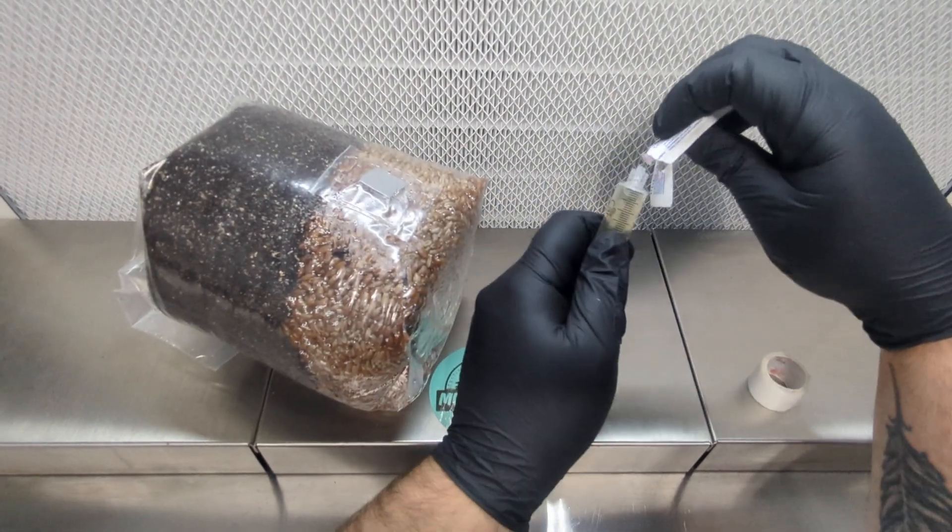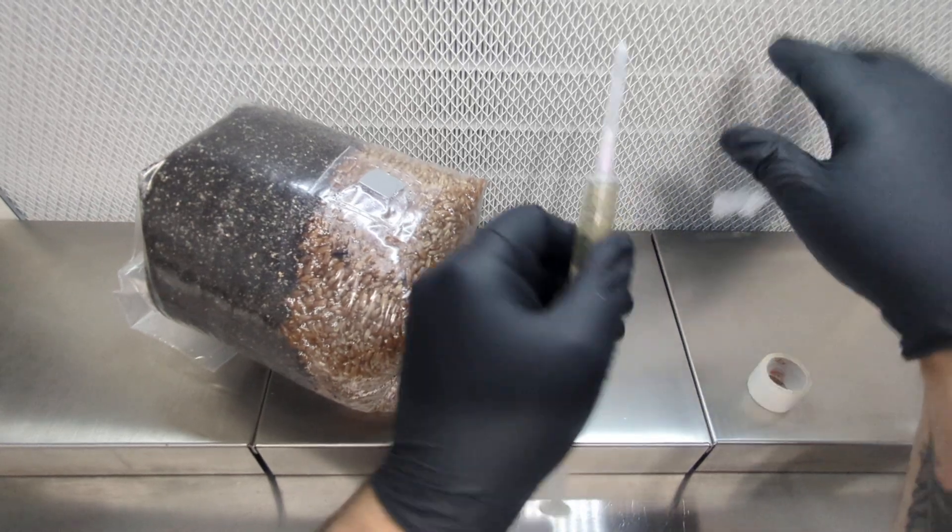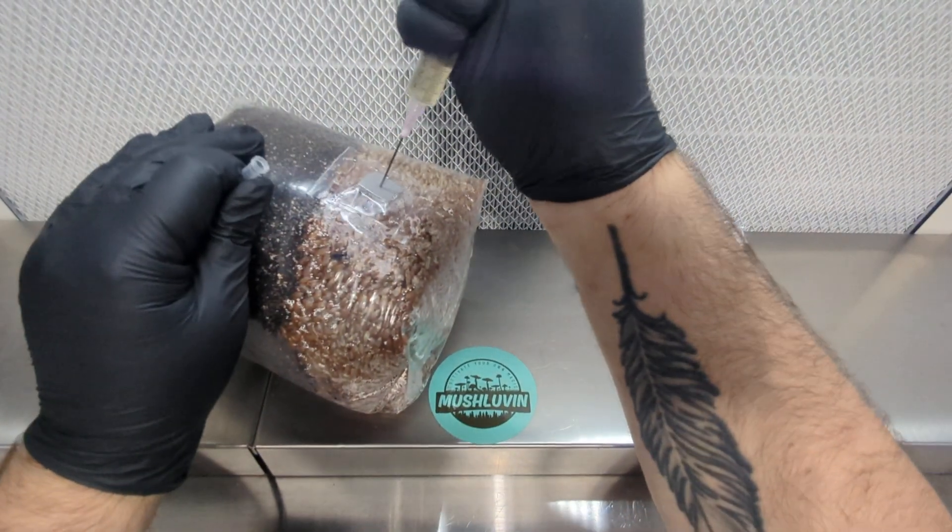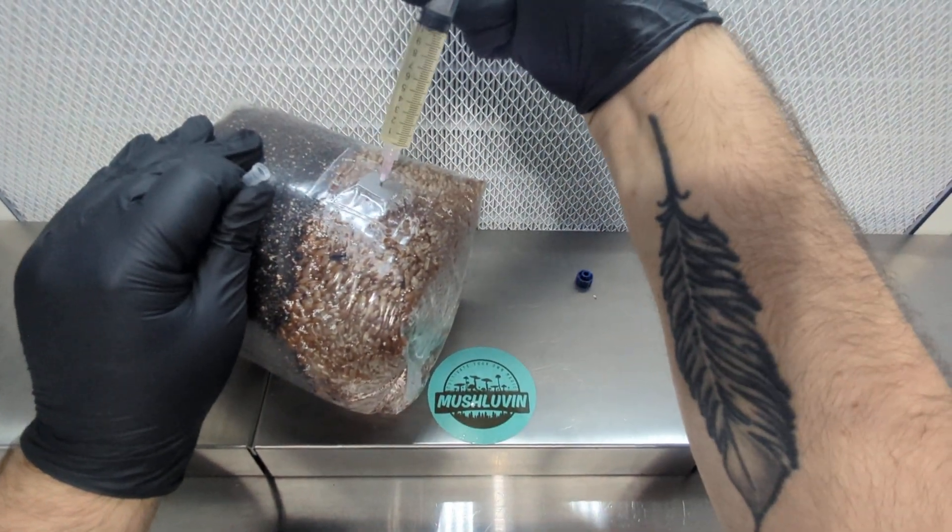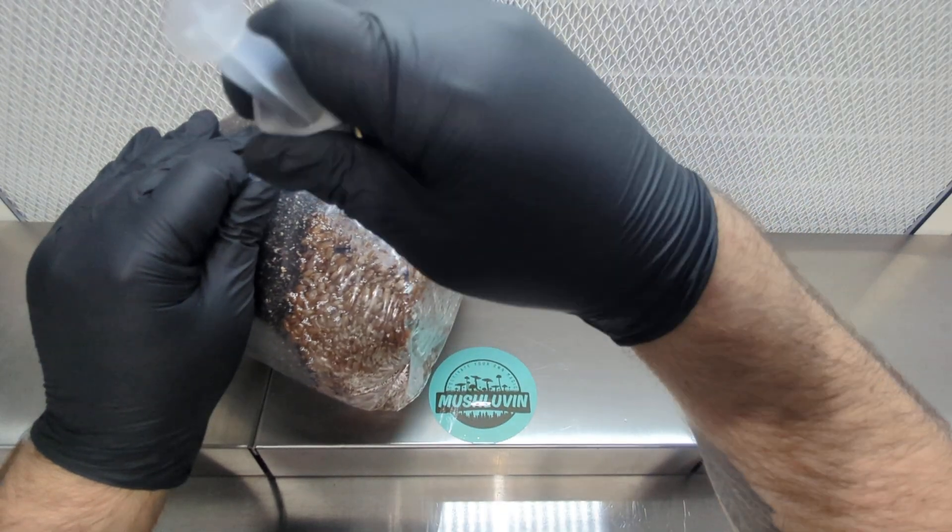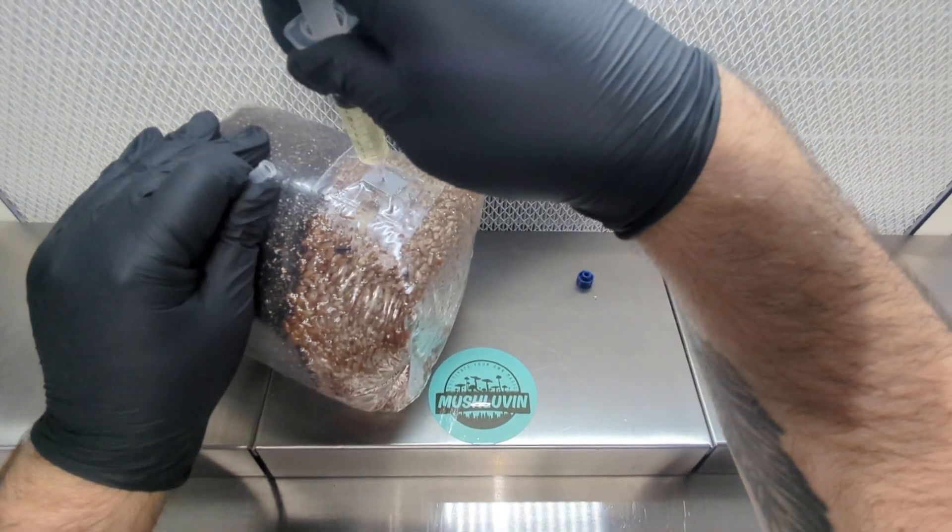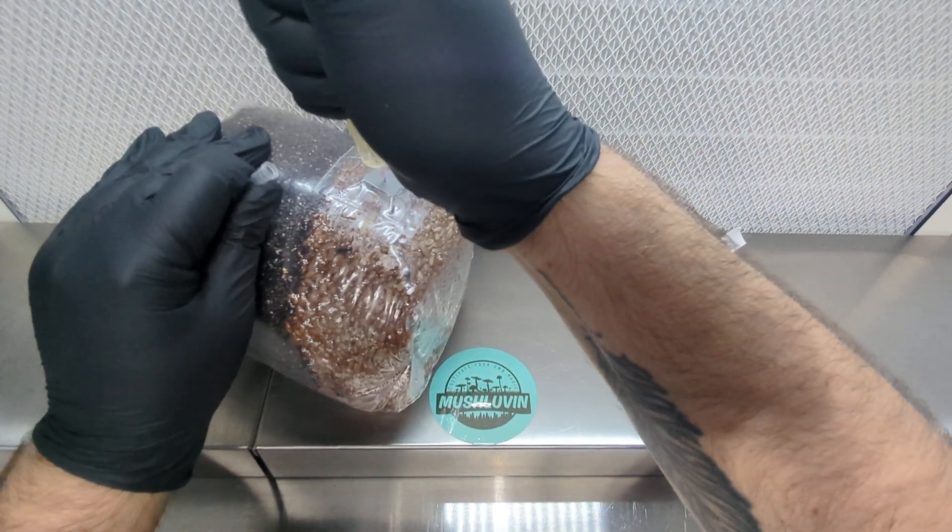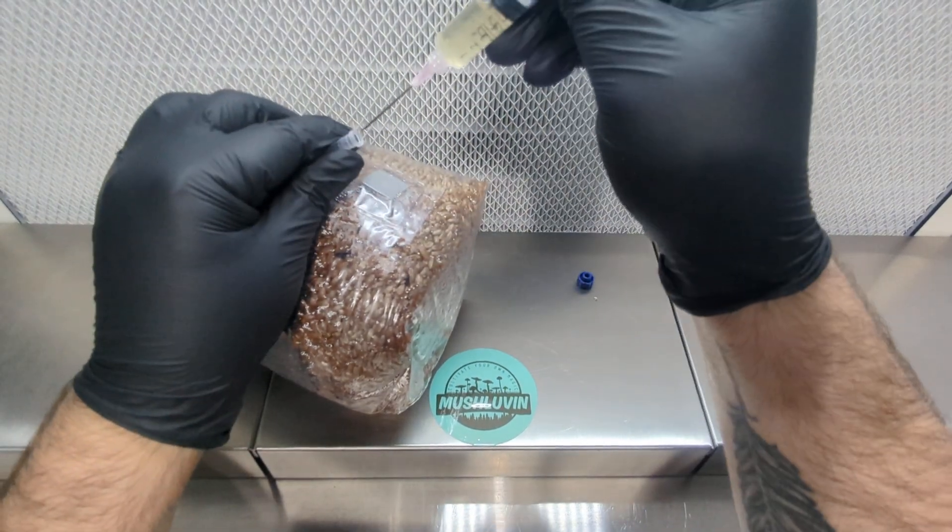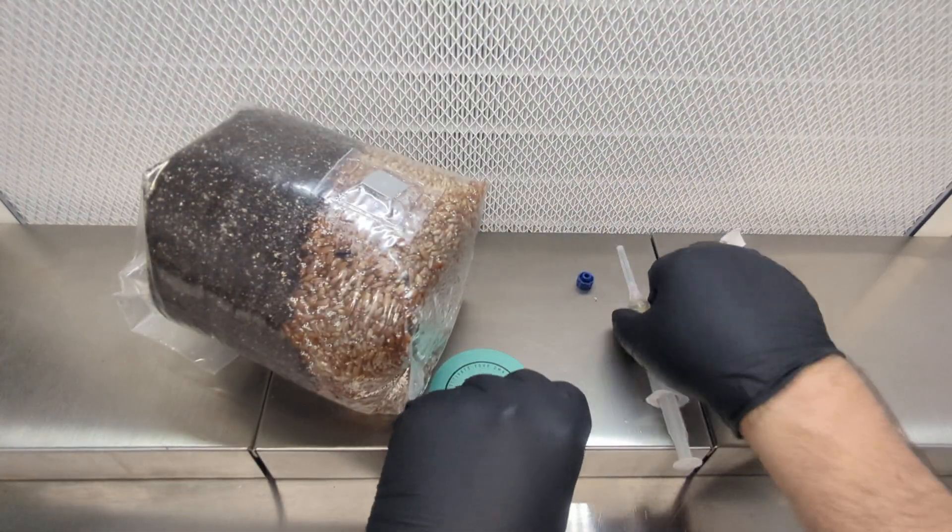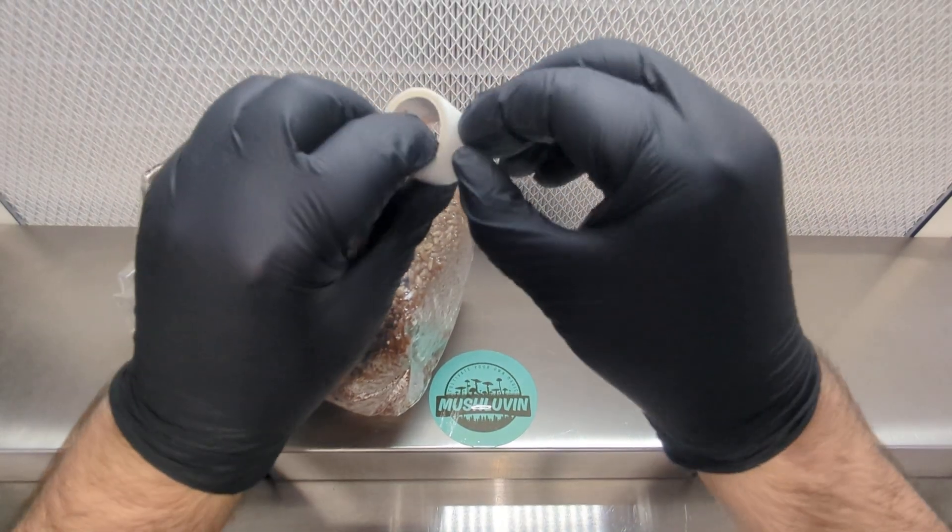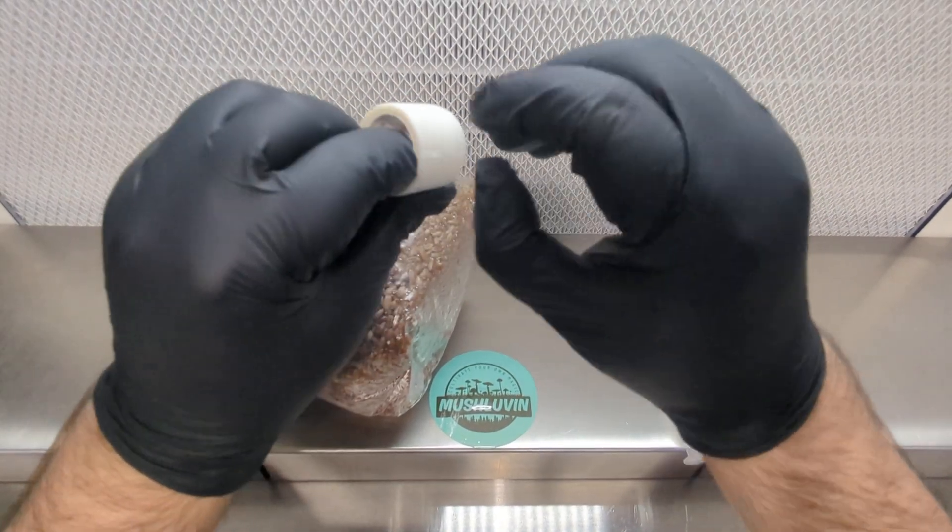I'm going to take the cap off, screw the needle on and go right in there and I'm going to do two and a half. Oh, I did three, oops. I'm going to go ahead and do two and a half here. All right, I'm going to put that on there, put the cap back on the needle, put some of our tape.